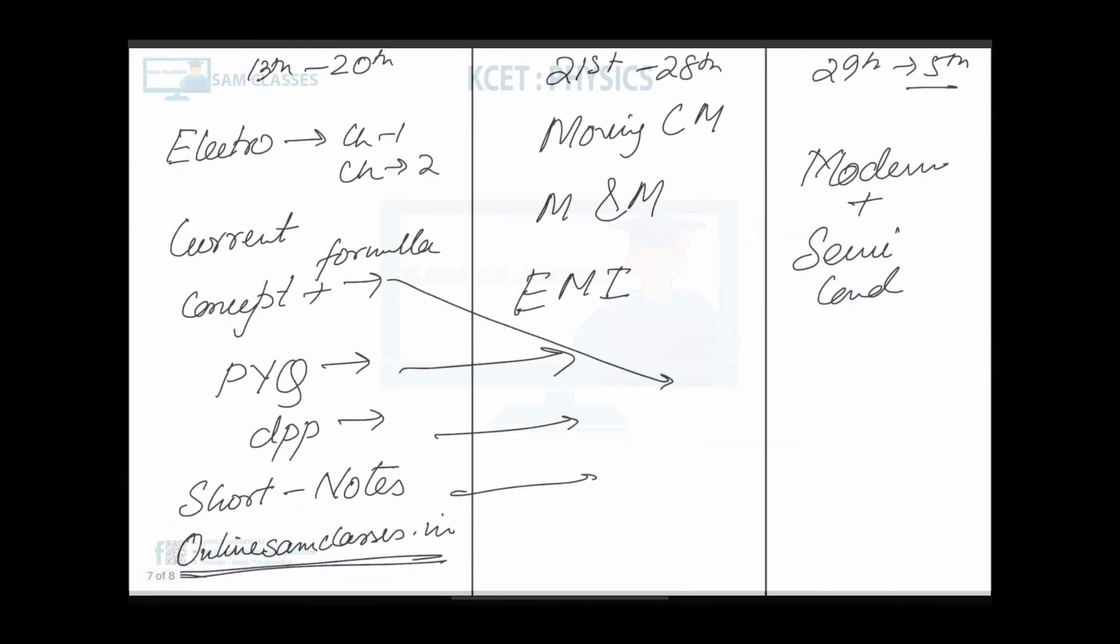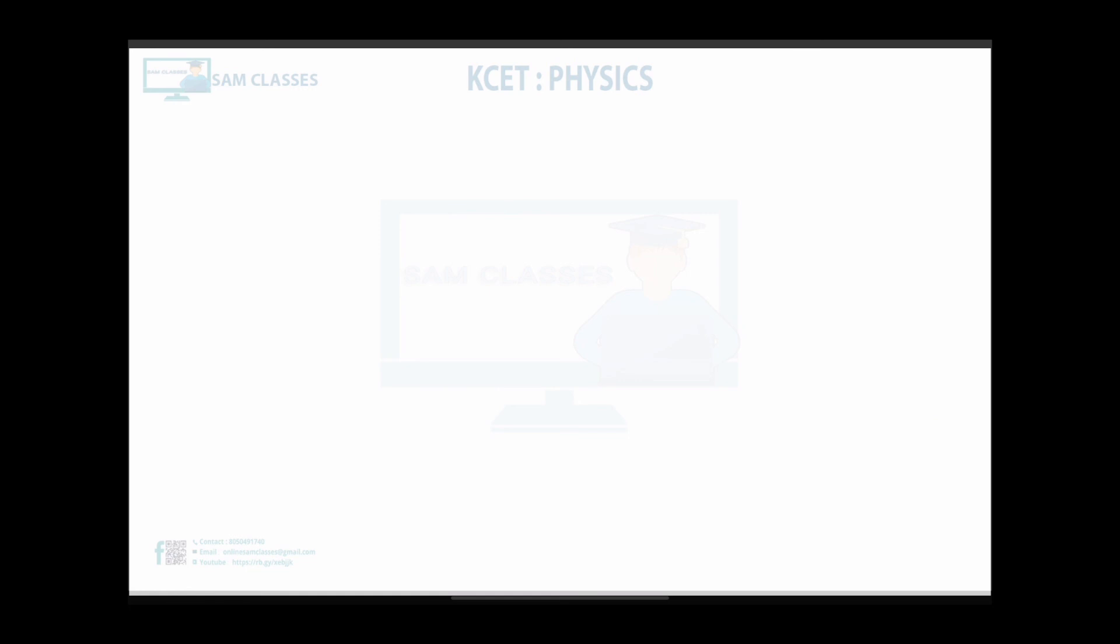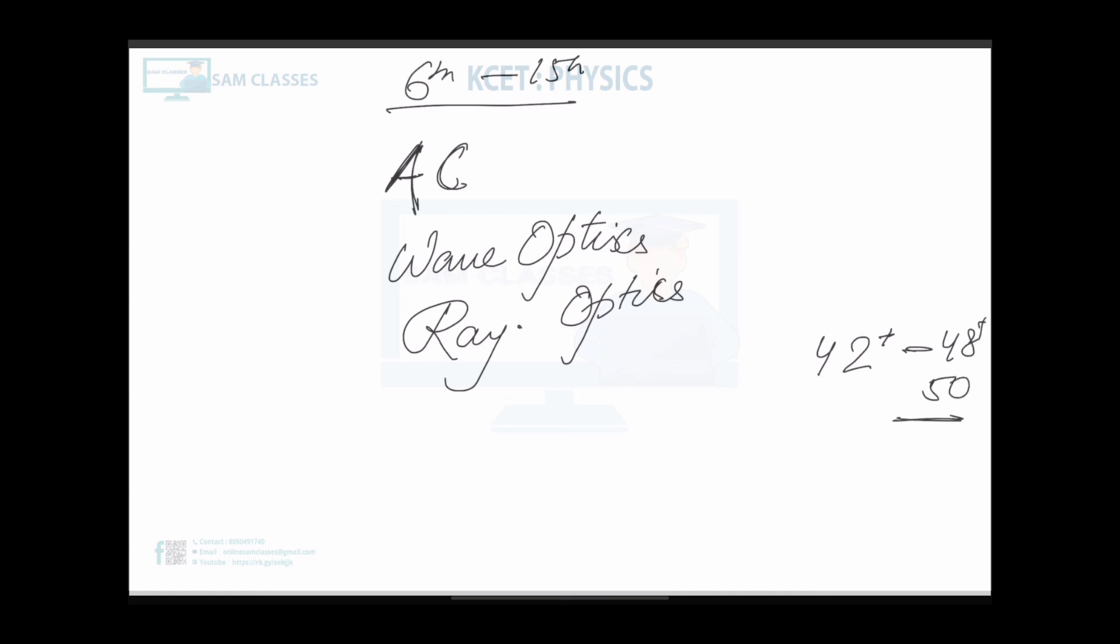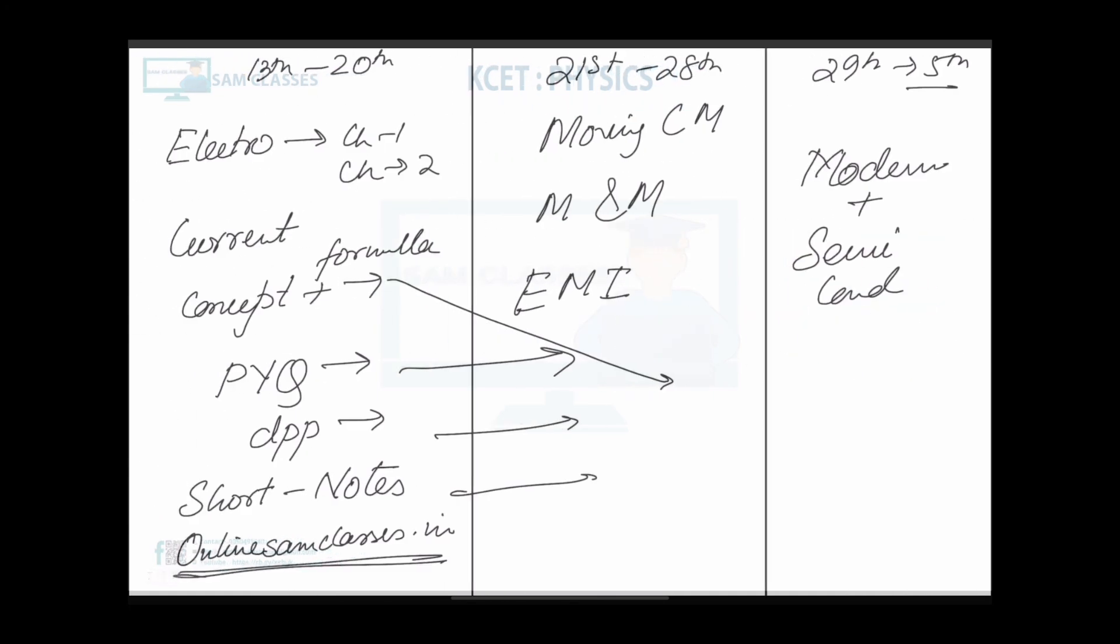The last week from 6th to 15th covers tougher topics: AC, Wave Optics, and Ray Optics. We won't be able to provide the 11th topics. If you cover this much, you'll score minimum 42 plus to 48 plus or around 50. Seeing the time and everything involved, we'll provide only this much, but we'll make sure it's delivered along with maths on time so you don't have to worry.